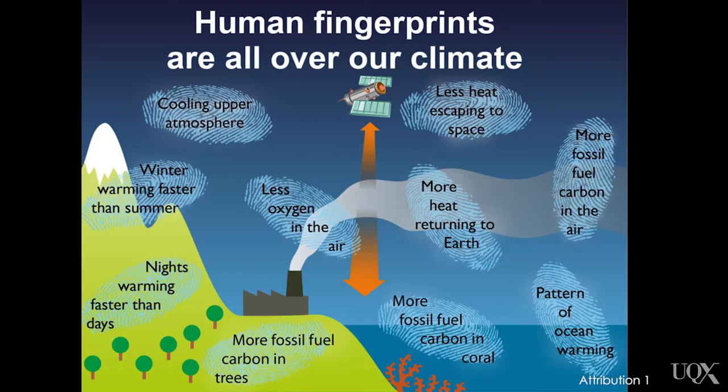Scientists predict that human-caused global warming should result in certain specific patterns of warming. Because these patterns are consistent with what we expect from the increased greenhouse effect, they're considered fingerprints of the human influence on Earth's climate.